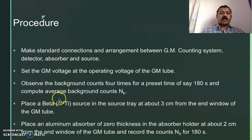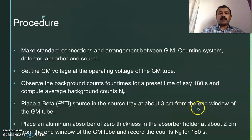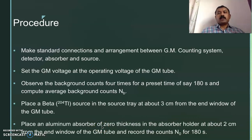After all these initial adjustments, you have to place a beta source — a standard one for which the endpoint energy of the beta particles is known. Here we use the Thallium source. We place it in the source stand at about 3 cm from the end window of the GM tube. Then we place aluminium absorbers one by one of different thicknesses and record the counts. How to record these counts is given in the description link.